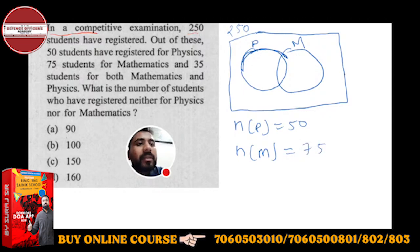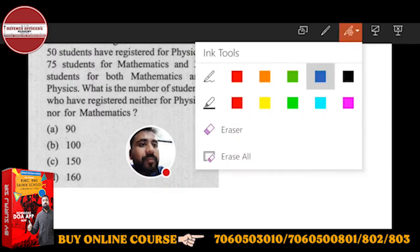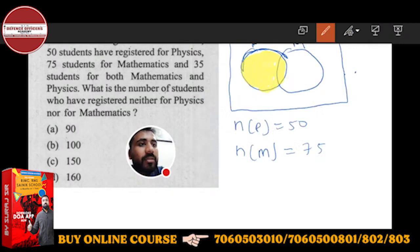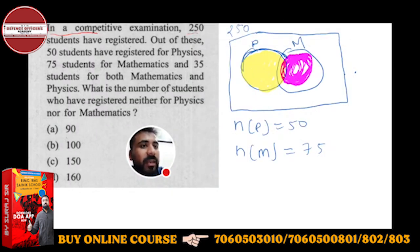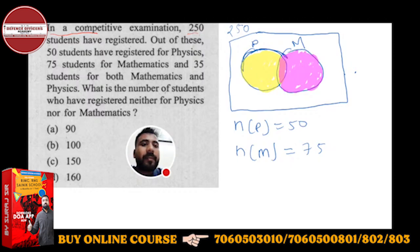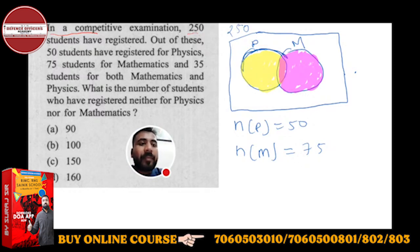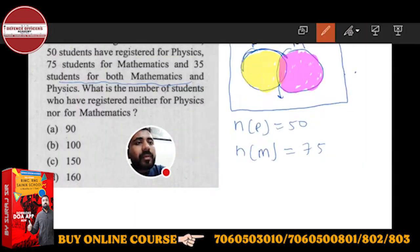This whole P circle — let me highlight it in yellow. This whole highlighted portion is P. I will highlight M in pink — this whole circle is M. You can visualize that the common portion is both pink and yellow. This common portion is very important. I cannot write directly 50 in the physics circle because that also includes the common portion with mathematics. Maths and Physics together — this common portion is 35 given to you.